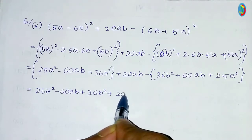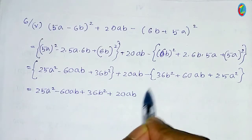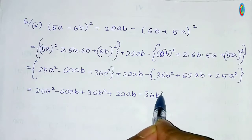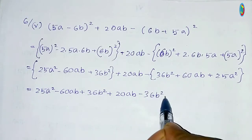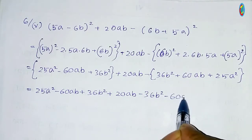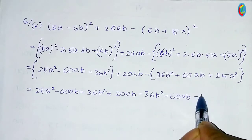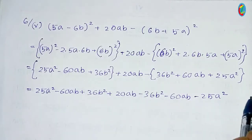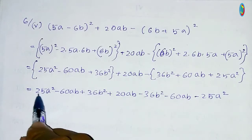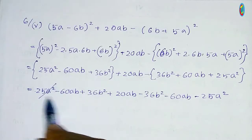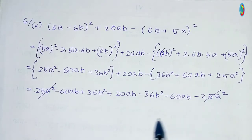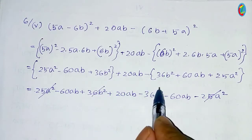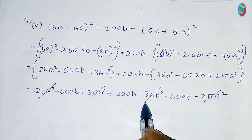I'm going to add plus 20ab and I'm going to add minus sin here. I'm going to add plus 20ab. 25a square — at a positive and at a negative — looking at a critical take; 10 guard on 36b square, at a positive and at a negative.